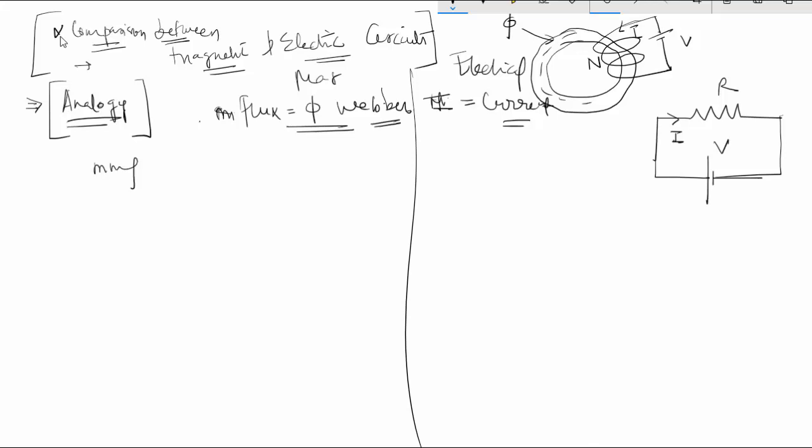The MMF can be given as NI in ampere turns and the flux is given by phi. And the flux can be given by MMF divided by reluctance S. So this is very similar to how the EMF is equal to the volts and the resistance R is equal to V by I or the current I is equal to V by R.